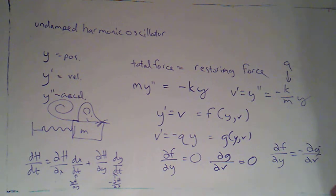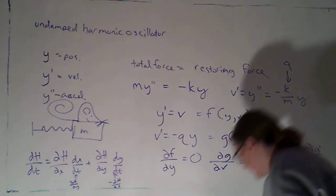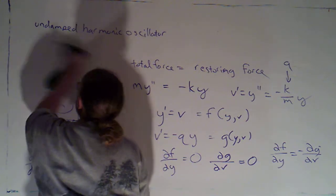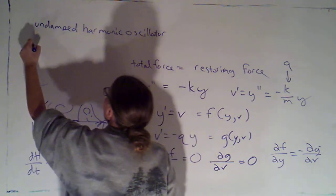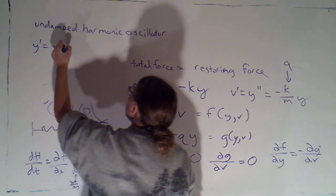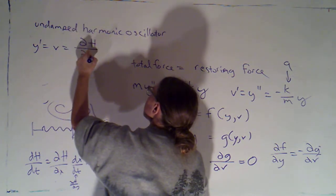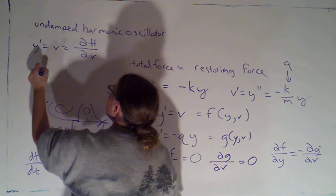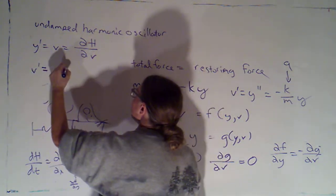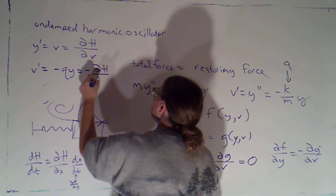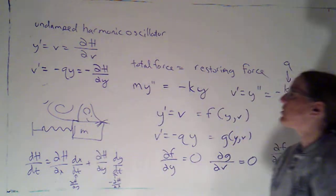And so, I do have that the partial of f with respect to y is the opposite of the partial of g with respect to v. So, this is, in fact, Hamiltonian. So, let me just write it down again up here. I've got y prime equals v, and I now know that that's the partial of h with respect to v. And v prime is negative q times y, and I know that's the opposite of the partial of h with respect to y.